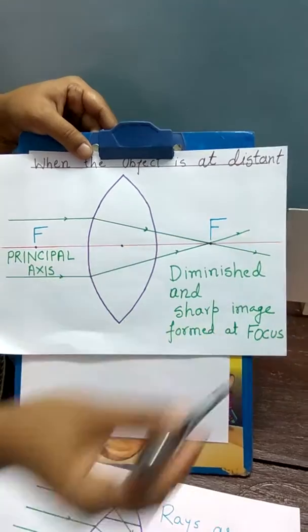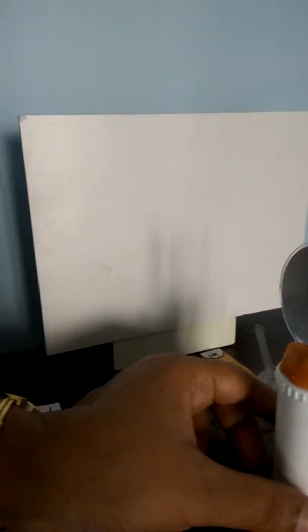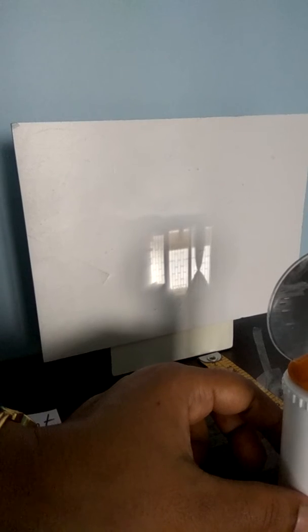Now we will see through the experiment how this has happened. Here I have set up experiment. This is a convex lens and here is a screen and we will see that a sharp image of the window should form on the screen.